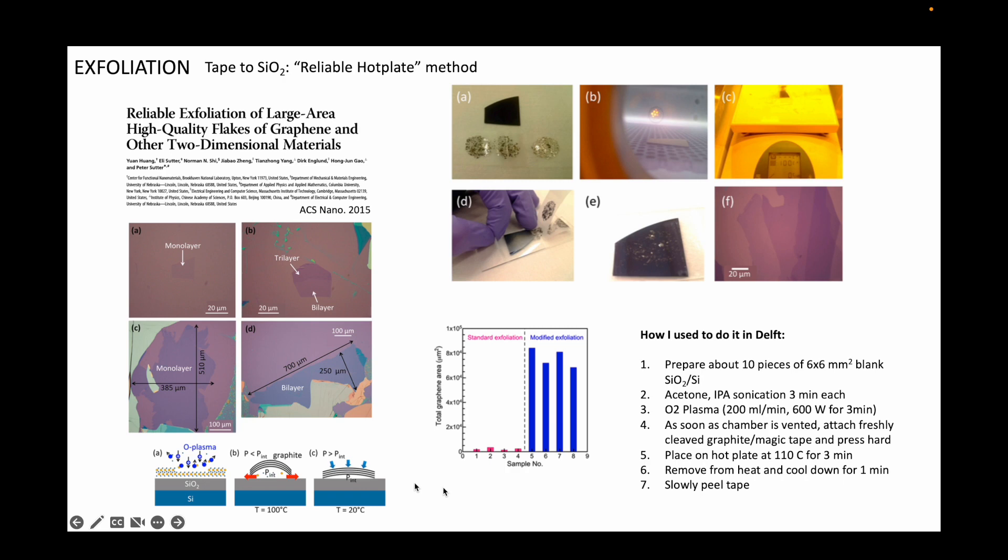The idea is that with oxygen plasma you remove organic residues or water adsorbates from the surface of the silicon silicon dioxide, then by attaching the tape with graphene and heating it up, the gases in between the graphene and silicon dioxide are released through the interface. And finally, when the chip is cooled back down, the 2D flakes relax to the substrate and adhere to the surface, leaving large monolayers on the surface. The paper describes this with respect to the internal and external pressures, but I'm not quite sure if this is a hypothesis or it has been experimentally proven.